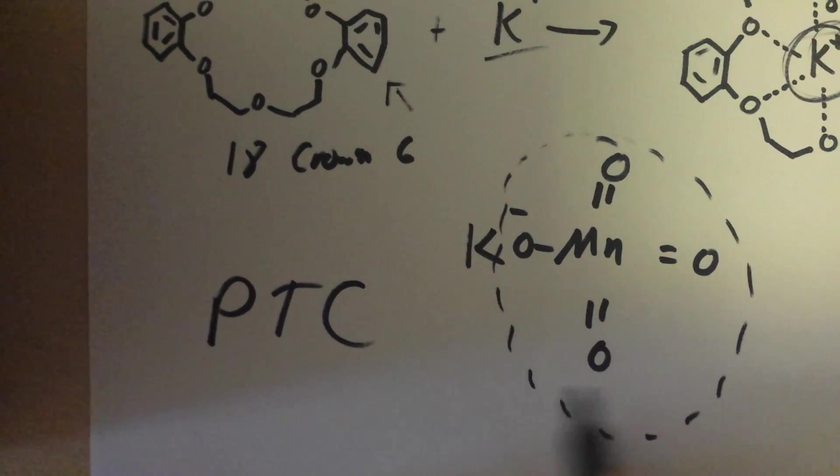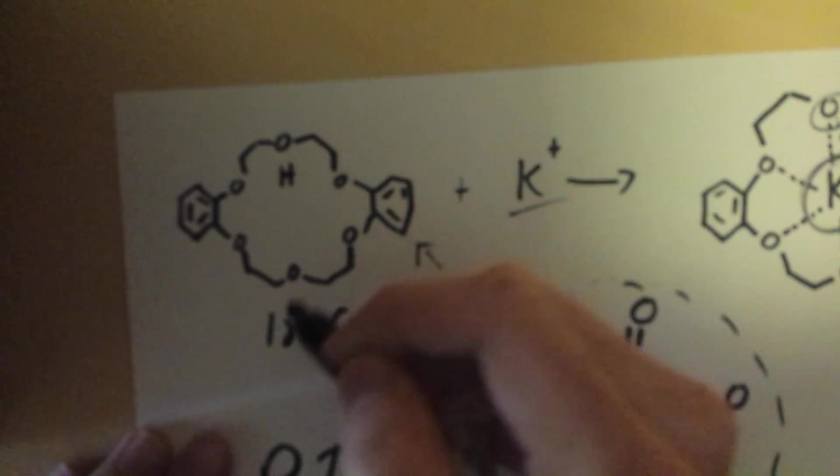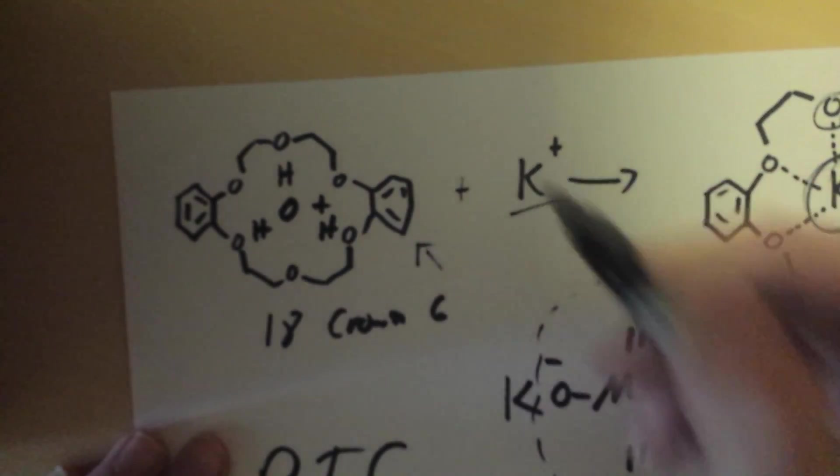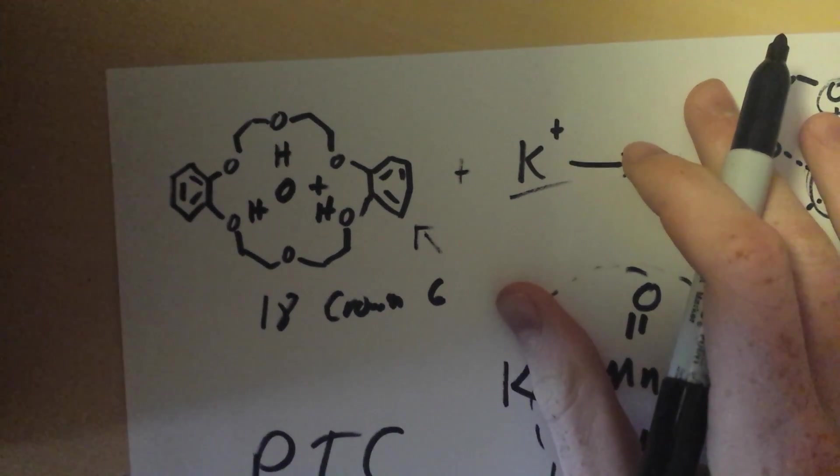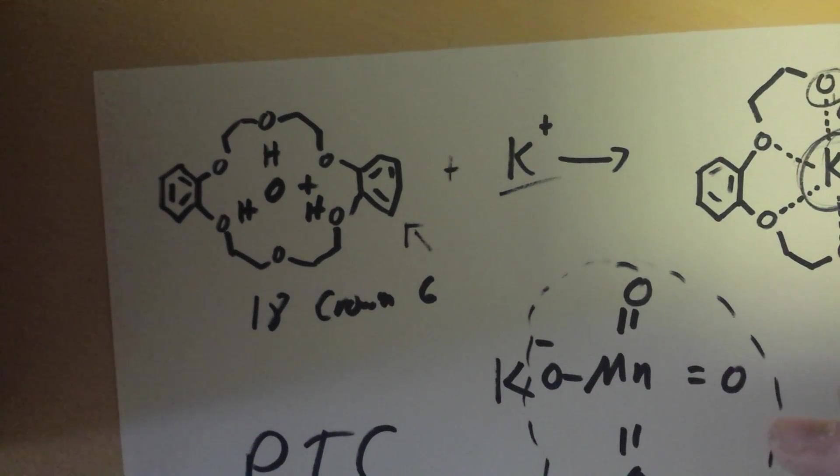18 crown 6 also is able to bind with a hydronium ion, or H3O+, so that's why you cannot have 18 crown 6 or any crown ether in an acidic medium, on fear of it binding like this.